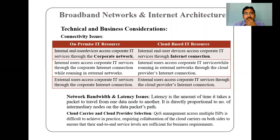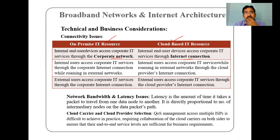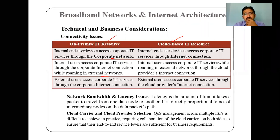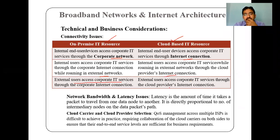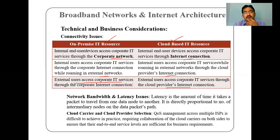On-premises IT resources and cloud-based IT resources: on-premises means pay-and-use, using a corporate network with limited proprietary access. For internet-based access, only an internet connection is needed. External users can access the corporate network, and cloud providers can also be accessed with the help of internet connections — both can be done.